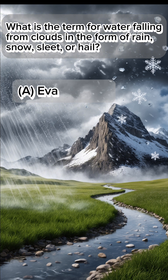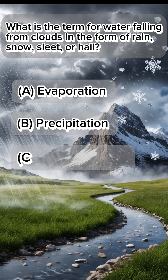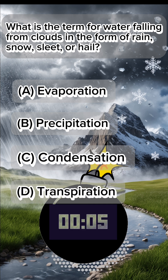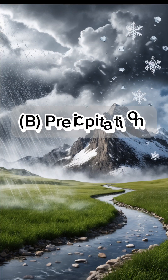What is the term for water falling from clouds in the form of rain, snow, sleet, or hail? A: evaporation, B: precipitation, C: condensation, D: transpiration. The answer is B: precipitation.